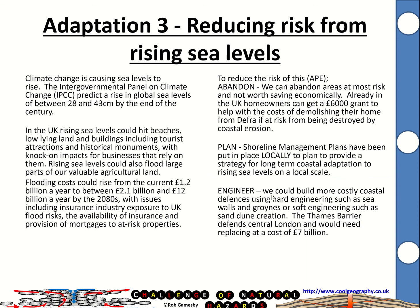The last adaptation strategy is reducing the risk from rising sea levels. Sea levels are rising and the IPCC expects this to continue. Flooding costs could rise from the current £1.2 billion a year to between £2.1 billion and £12 billion by the 2080s. We can respond by building costly coastal defences like walls and groynes, replacing the Thames Barrier to defend central London, abandoning certain vulnerable areas, and putting shoreline management plans in place.